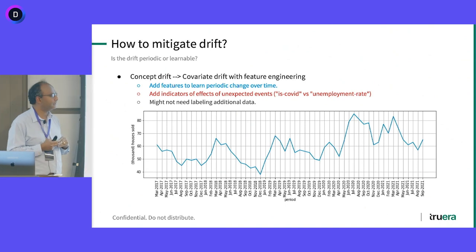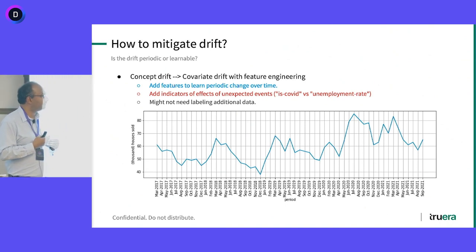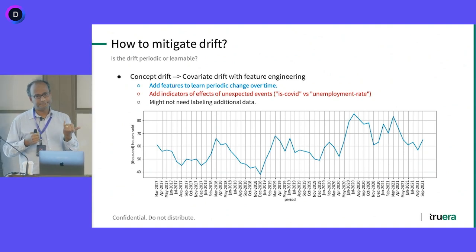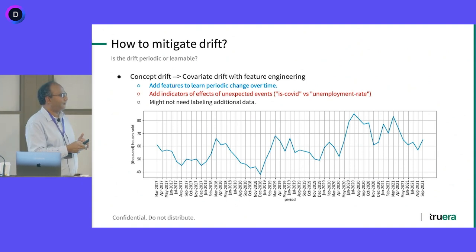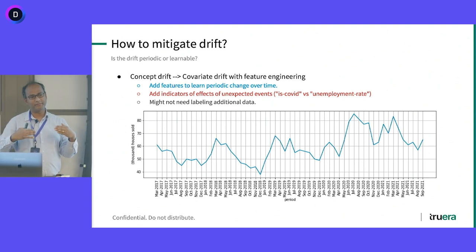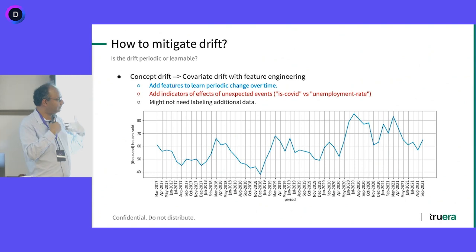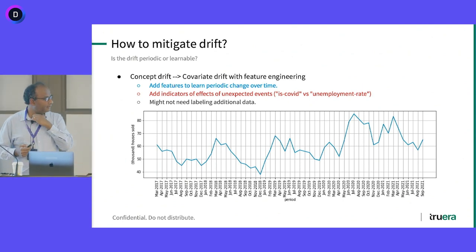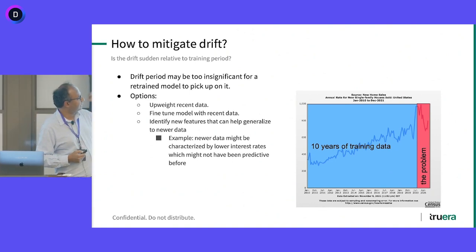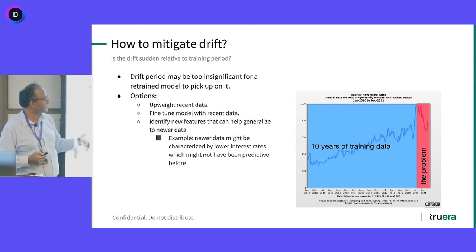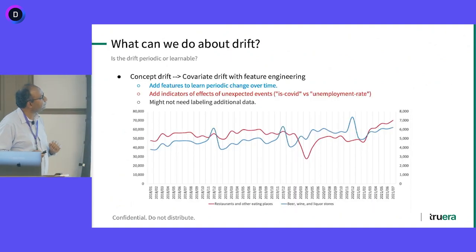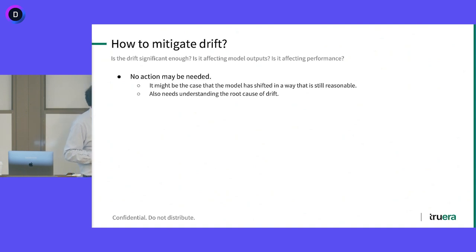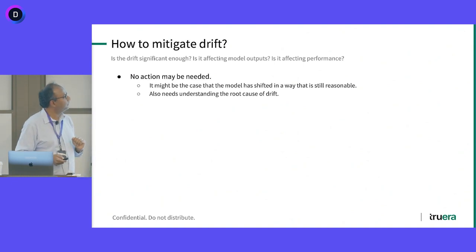For the Zillow models, keeping track of trend variables tracking housing prices changing by region — if done well — means some price decreases could be tracked as features, translating aspects of concept drift into covariate drift. Another point: the drift period may be too insignificant for a retrained model to pick up on, which is true of the sales world and many other examples. And finally, sometimes no action is needed — it may be the case that the model has shifted in a way that is still reasonable, like risk going up when income is going down. If that's the root cause of the drift, the model is perfectly good.